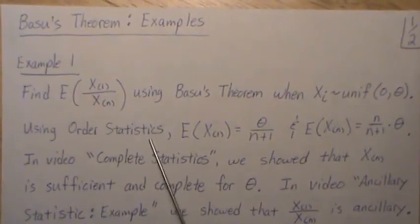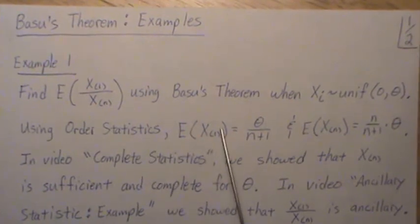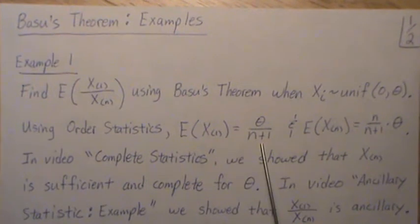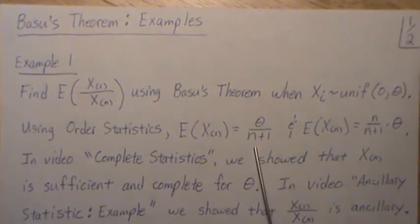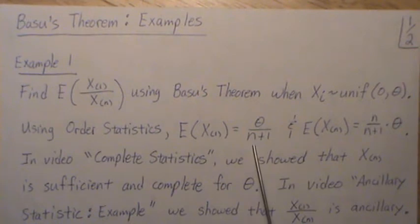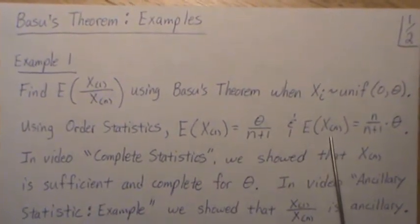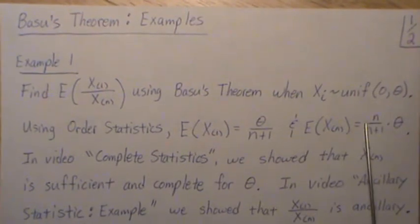Using order statistics we can find the expected value of the first order statistic to be theta over n+1. We're not going to cover that in this video. I have a playlist called order statistics where we review that and the expected value of the largest order statistic can be derived to be n theta over n+1.